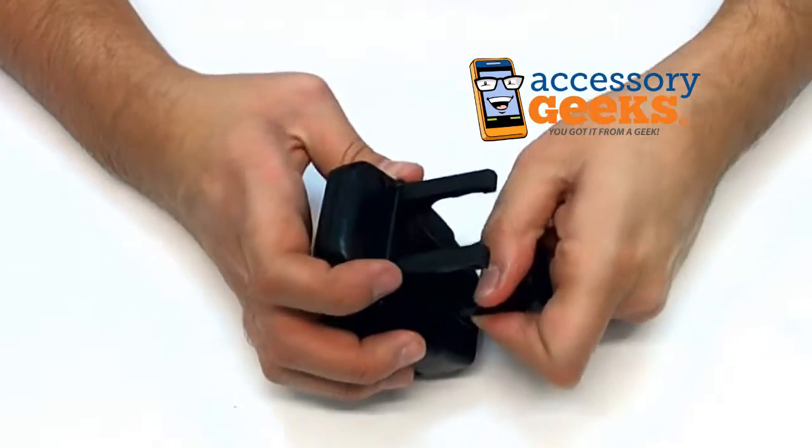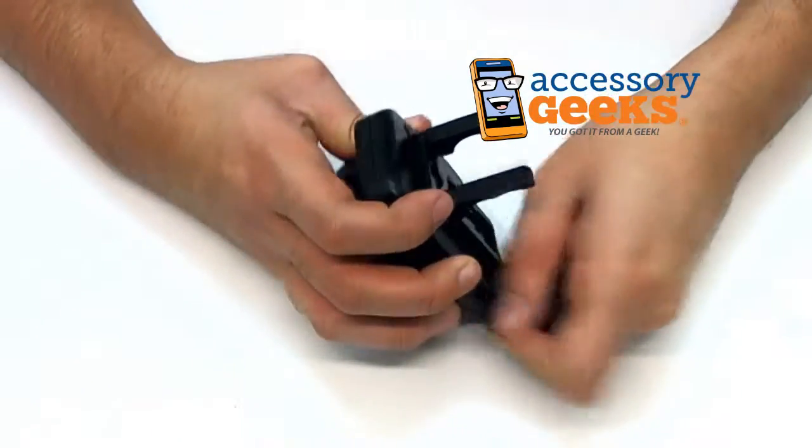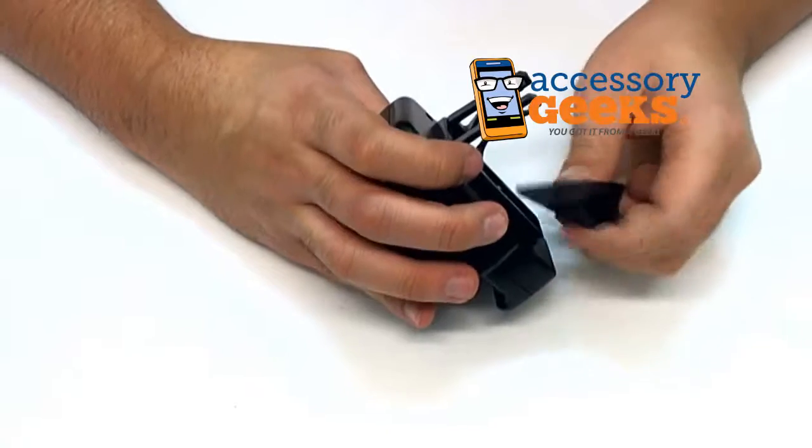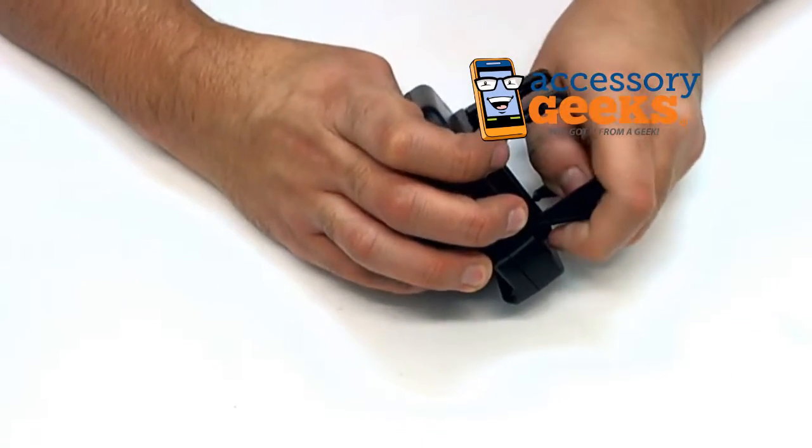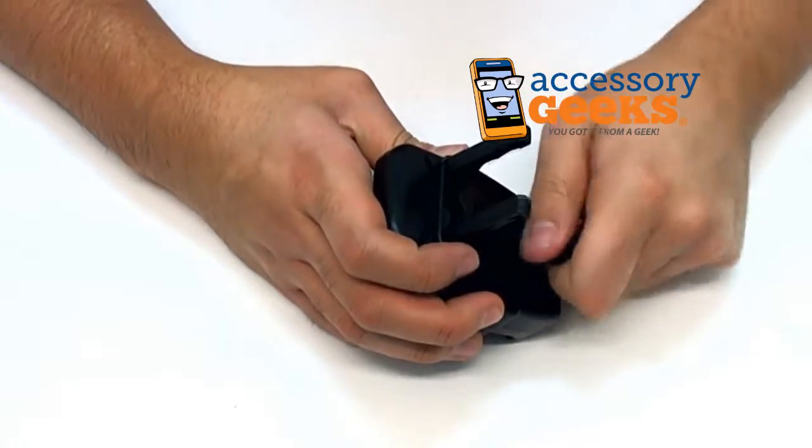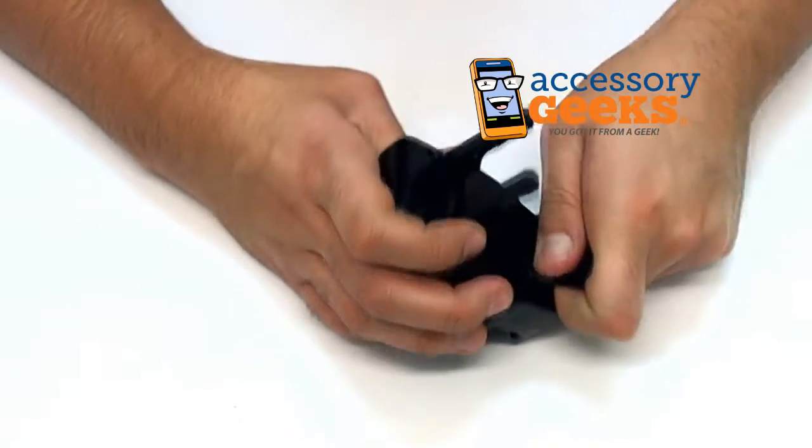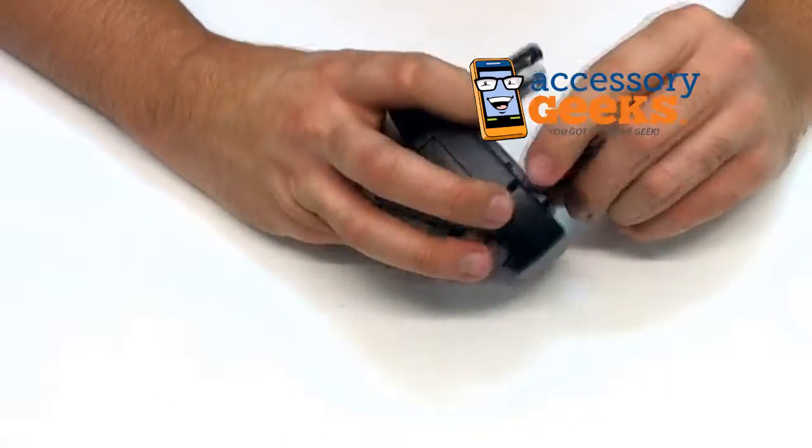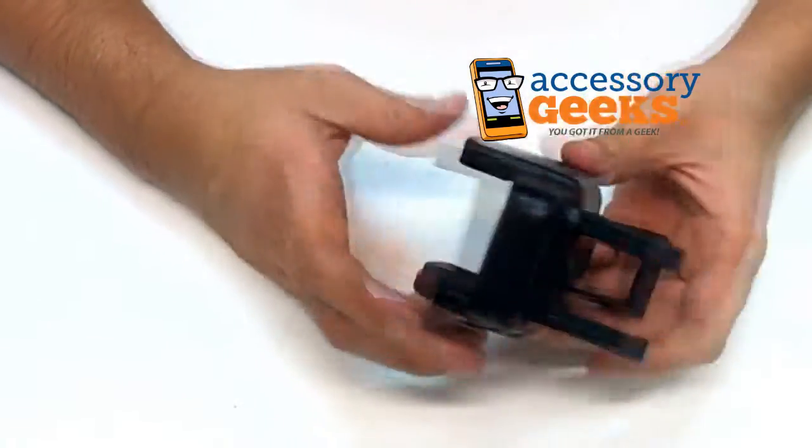And then there's also this little kickstand part, which is also extremely difficult to put on just because I don't want to break anything because I don't own this and I don't want to pay for it. Even though I probably should get one because I'm always using my phone as a GPS unit.